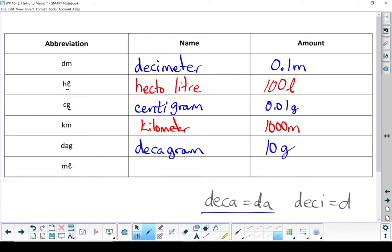Next, ML. That stands for milliliter. And there are a thousand milliliters in a liter. So one milliliter is a thousandth of a liter.